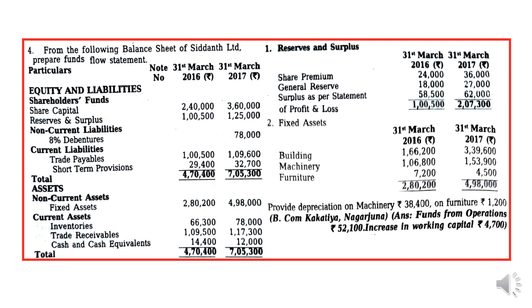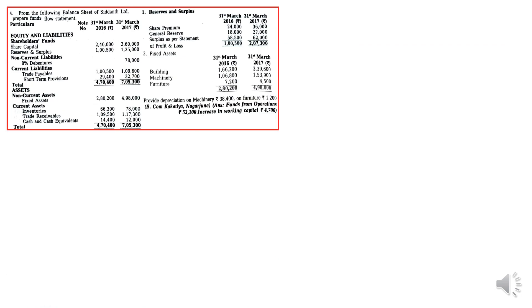Whenever you find an adjustment related to any account — in this case machinery and furniture — we need to prepare a ledger account to find out the missing values. These types of problems are very significant. This method of depreciation is called the net block method. In video number 5, which I will upload tomorrow, I will cover the gross block method.